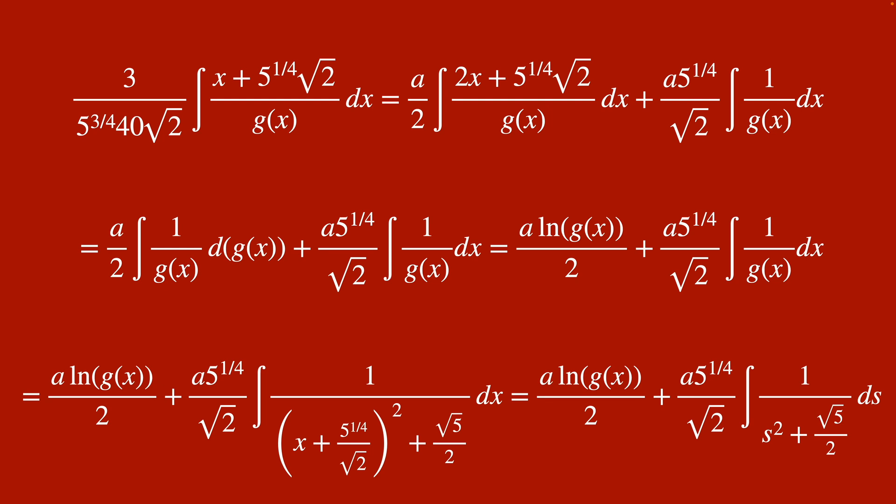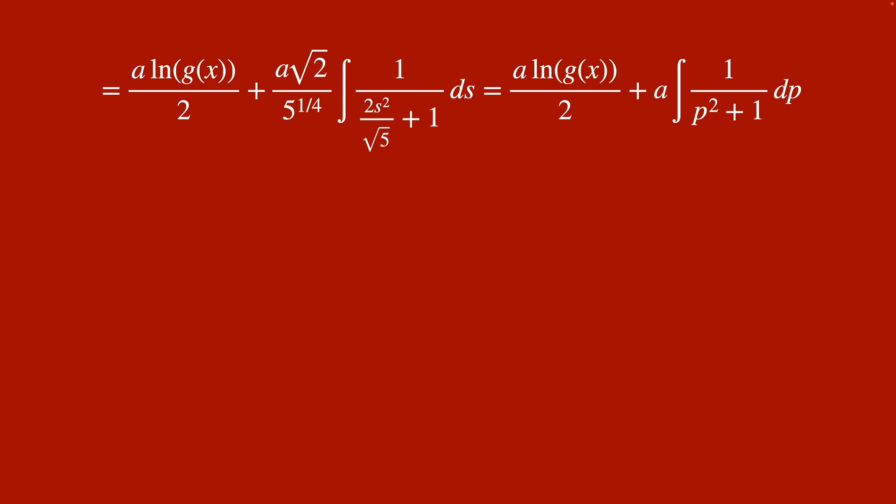then we can sub in s for x plus five to the one fourth divided by root two. And now we're almost done, right? As we can just factor out our constants like we do on the left hand side here, and then sub in p for this guy on the denominator.